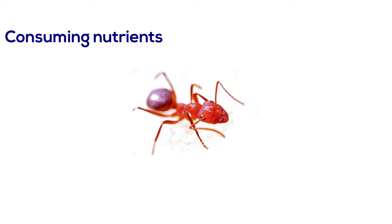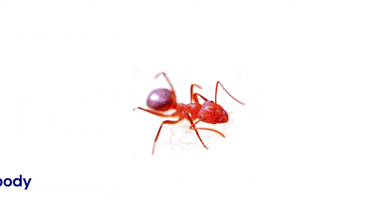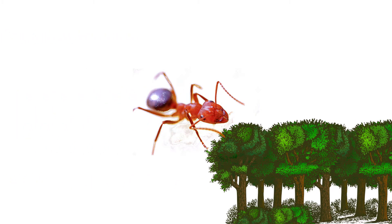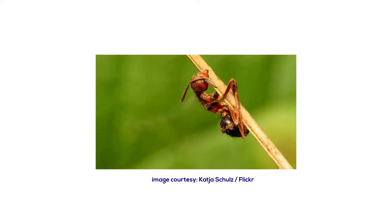The fungus keeps growing inside the ant, consuming all its nutrients and taking control of its body and mind. After about a week, the ant is forced to leave its nest and travel to a more suitable climate for the fungus to grow — about 25 centimeters above the ground — where it is compelled to sink its jaws into a leaf vein and wait for death.